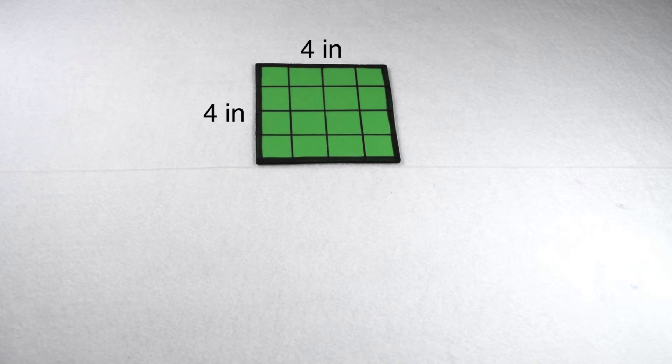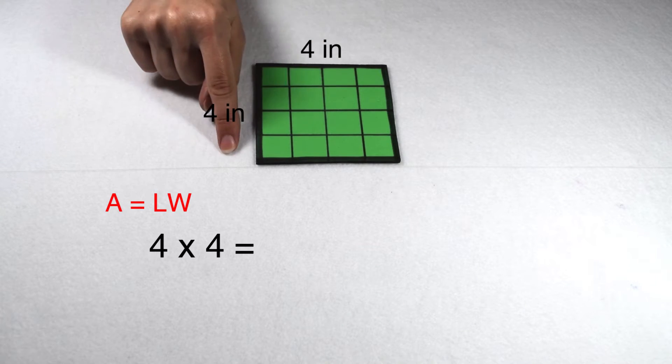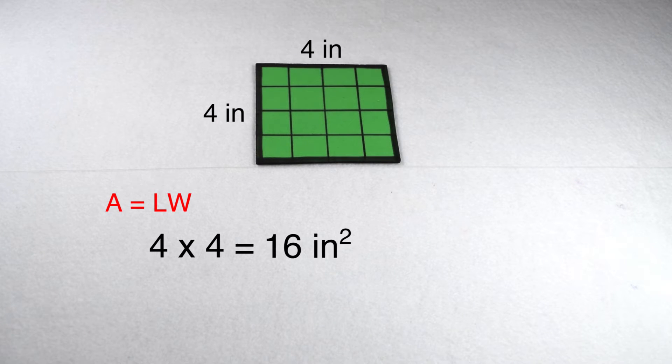If we didn't want to count the squares, we could multiply the length of 4 by the width of 4 to also give us an area of 16 square inches.